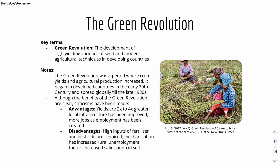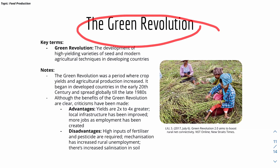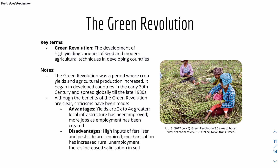The Green Revolution refers to the development of high-yielding varieties of seeds and modern agricultural techniques in developing countries, a period when crop yields and agricultural production increased significantly. Advantages include better yields, improved local infrastructure, and more employment. Disadvantages include high inputs of fertilizer and pesticide causing environmental pollution, mechanization increasing rural unemployment, and increased soil salinization — making soil more salty.